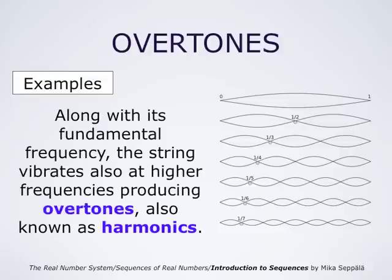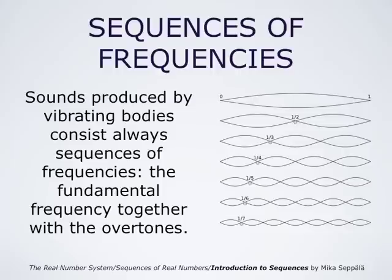So when the string vibrates in all of its length, it also vibrates in half of its length, one third, one fourth, one fifth, and so forth. This one half of the length of the string vibrating produces an overtone; one third produces another overtone, and so forth. So sounds produced by vibrating bodies always consist of sequences of frequencies — the fundamental frequency together with the overtones.